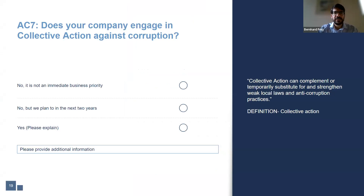The purpose of question AC-7 is to understand if your organization is engaging in collective action, either through UN Global Compact local network initiatives or through another organization in your business environment. The UN Global Compact uses the World Bank's definition of collective action against corruption: a collaborative and sustained process of cooperation between stakeholders that increases the impact and credibility of individual action, brings vulnerable individual players into an alliance of like-minded organizations, and levels the playing field between competitors. Collective action can complement or temporarily substitute for weak local laws and anti-corruption practices.